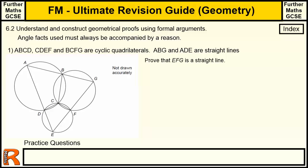This is the second video in the Geometry section of the Ultimate Revision Guide for Further Maths GCSE. There's an index button to take you back to the geometry index, and from there back to the index of indexes. I also think I've got some higher-level A-style questions on geometrical proofs that might be useful — I'll put a link down here.